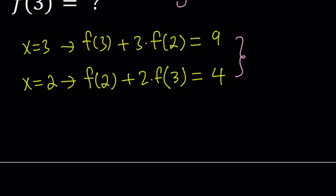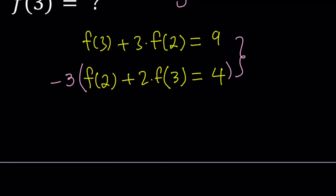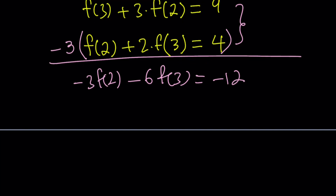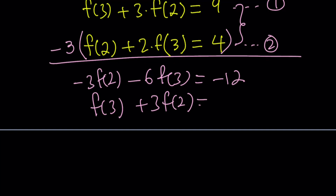So how do you solve for f of 3? You want to get rid of f of 2. Since I want to eliminate f of 2, it makes sense to multiply the second equation by negative 3. We have to distribute negative 3 everywhere: negative 3 f of 2 minus 6 f of 3 equals negative 12. This is my second equation. And the first equation is f of 3 plus 3 times f of 2 equals 9.